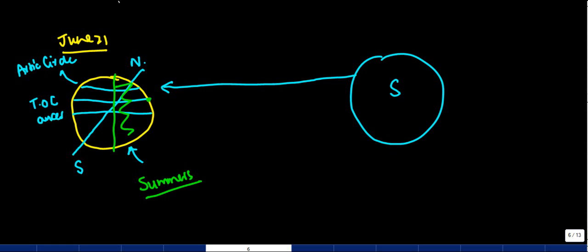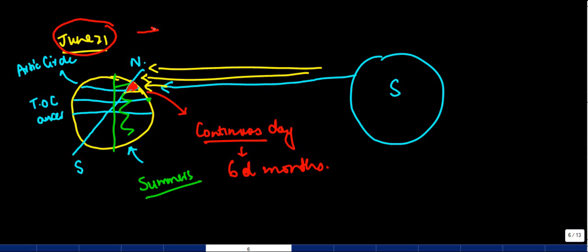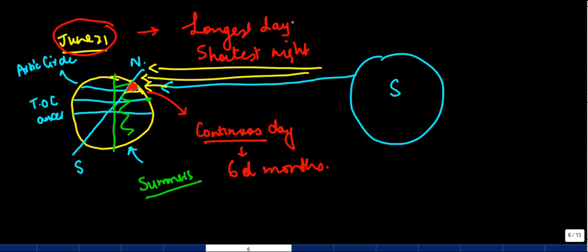For places close to the North Pole — because the Earth is inclined towards the Sun — the rays fall directly there, so that portion has continuous day. This continuously happens for six months. On June 21, this is basically the longest day, and what follows is the shortest night. This position of the Earth is known as the summer solstice.